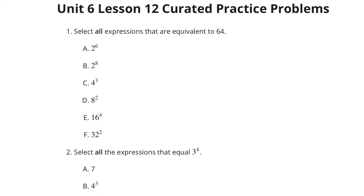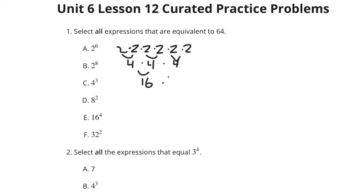Dealing with exponents today, so select all expressions in question 1 that are equivalent to 64. Well, 2 to the 6th is 2 times 2 times 2 times 2 times 2 times 2. That's 4 times 4 times 4, which would be 16 times 4, which is in fact 64. So 2 to the 6th is 64, which means 2 to the 8th isn't, because you're multiplying that by another 2 times 2, another 4. So that's not going to be it.